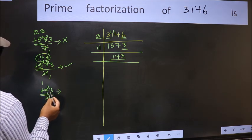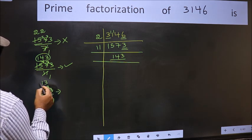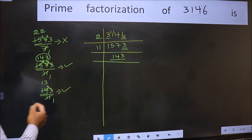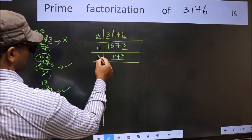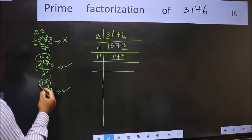3 carried forward 33. When do we get 33 in 11 table? 11, 3 is 33. No number has been left out. So this is divisible by 11. So 11 here. And here we should write this number 13.